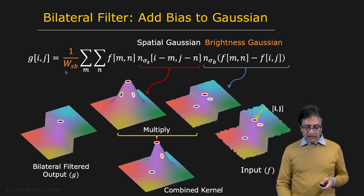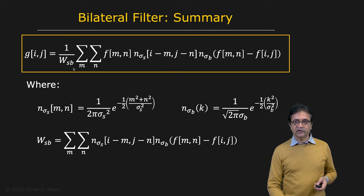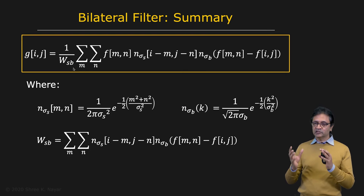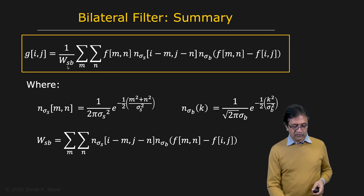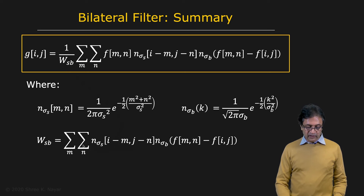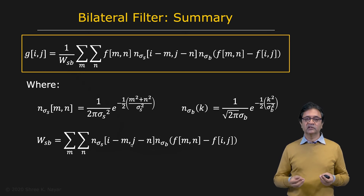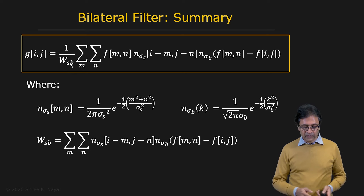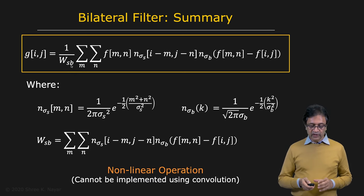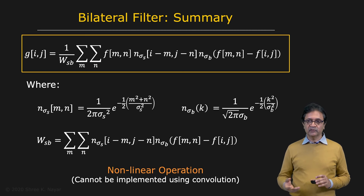Let's take a look at the normalization factor that we set aside. Irrespective of how complex the shape of the filter is, you want to make sure the energy in the filter is always equal to one. So you change this weighting function as you go, done by simply summing up the product of the brightness Gaussian and the spatial Gaussian — summing up the weights used for all the pixels in the window and normalizing the output with that. The bilateral filter is a nonlinear operator that simply cannot be implemented as a convolution.